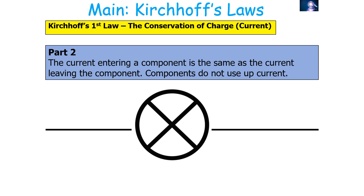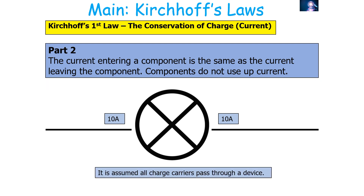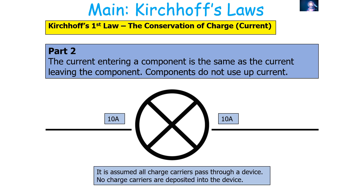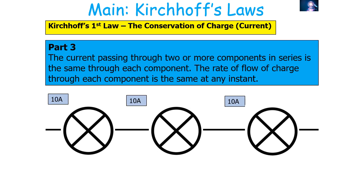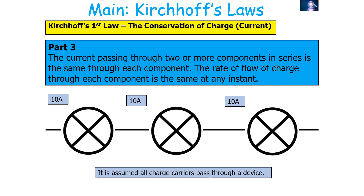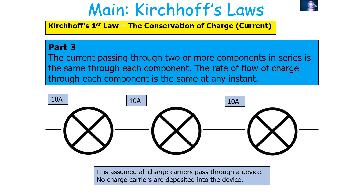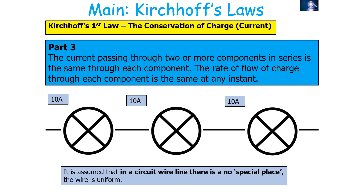The second part of Kirchhoff's first law is that the current entering a component is the same as the current leaving the component — components do not use up current. This is because we assume all charge carriers pass through the device, no charge carriers are deposited into the device, and no charge carriers change speed. The third part is that the current passing through two or more components in series is the same through each component; the rate of flow of charge is the same at any instant.